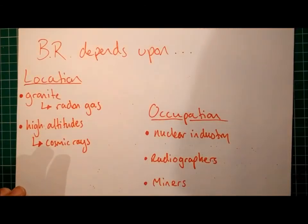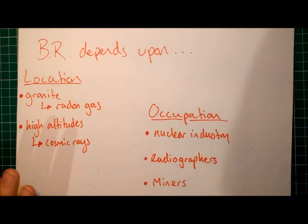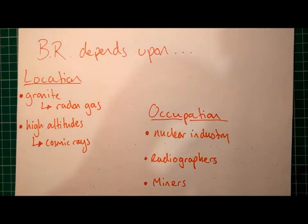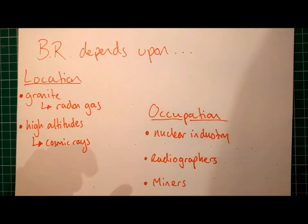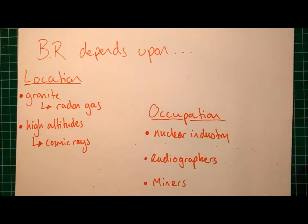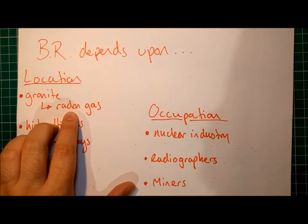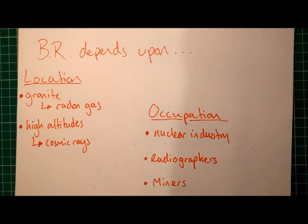Background radiation depends upon two things for any given person: your location and your occupation. If you lived in a part of the UK with more granite rocks in the area, those granite rocks can release more radiation, increasing the background radiation level. This is increased further if the granite rocks are emitting radon gas, which itself is a radioisotope and is radioactive.